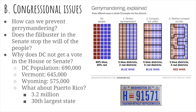The filibuster disproportionately benefits the Republican Party over the Democratic Party. To provide a bit more historical perspective, the filibuster hasn't always existed — it's not written into the Constitution, and the Founding Fathers said nothing about the use of the filibuster. It's worth noting that some of the most famous filibusters in American history have been used to try to prevent civil rights legislation from passing.